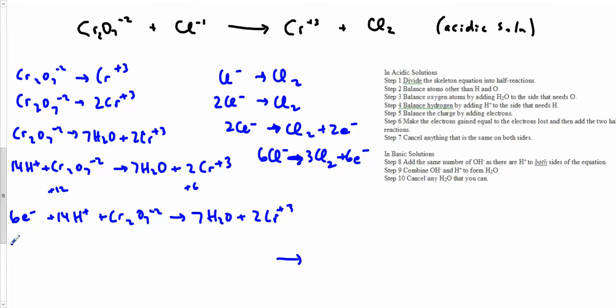I've got 6 Cl minus, I've got 6 electrons, I've got 14 H plus, I've got a Cr2O7 minus 2. Over here I've got 7 waters, I've got 2 of these Cr plus 3s, I've got 3 Cl2s, and I've got 6 electrons.